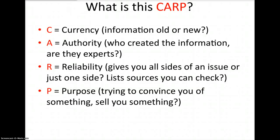Currency asks whether the information on the website is old or new. Authority asks whether or not the information was created by experts. Reliability tests whether the website gives us all sides of the issue or just one side, and whether it lists sources so we can check its information. Purpose tests whether the website is trying to convince us of something or sell us something, whether it's an idea or a product.